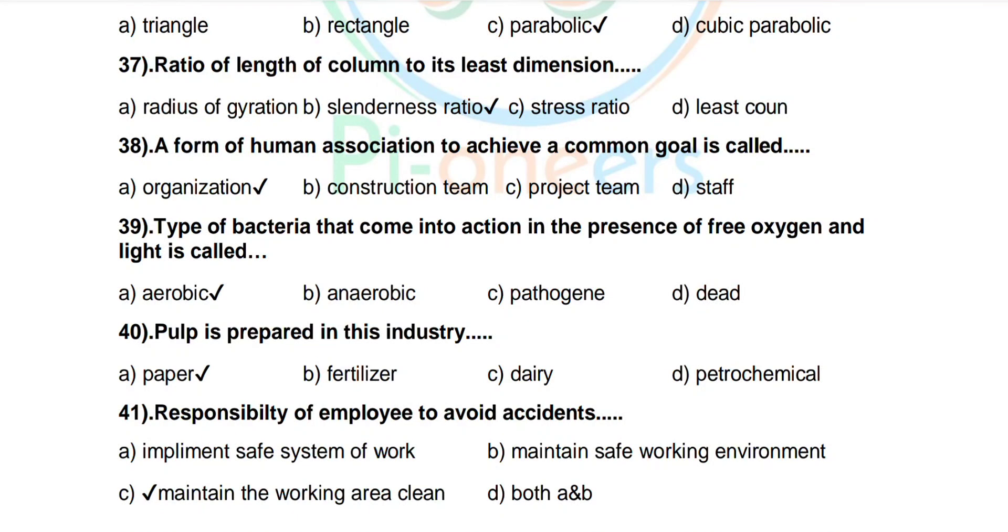Question number 40: Pulp is prepared in this industry. Options are fertilizer, dairy, petrochemical, and paper. Correct answer: paper.